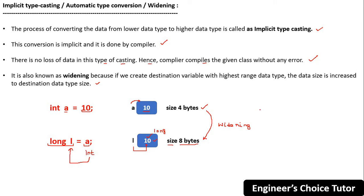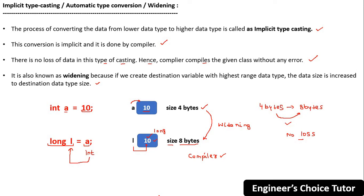Is there any loss if we assign 4 bytes of data to an 8-byte variable? Not at all — 4 bytes can be easily accommodated in 8 bytes, so no loss here. This type of conversion is implicit and it is done by the compiler. The process is called widening.